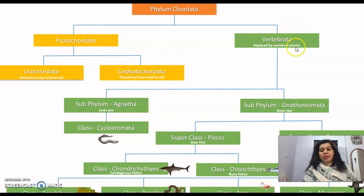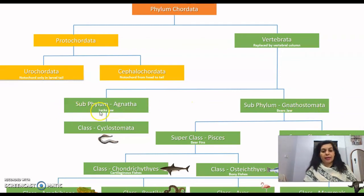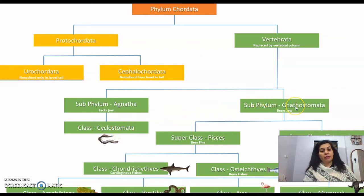For vertebrate classification, there are two subphyla: Agnatha and Gnathostomata. Agnatha lacks jaws — there are no jaws present — and includes the class Cyclostomata, which is jawless. On the other side, the subphylum Gnathostomata has jaws present.